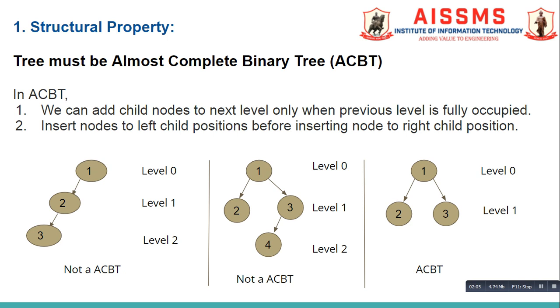In the third figure, we can see that level 1 is fully occupied and the left child position is filled before inserting the node at the right child position. So both conditions are satisfied, therefore this tree is an ACBT.